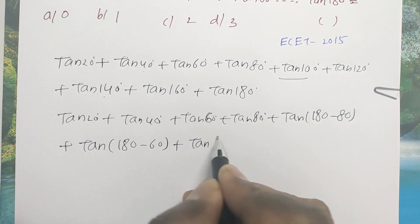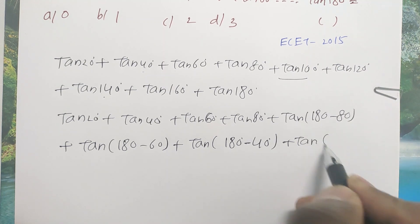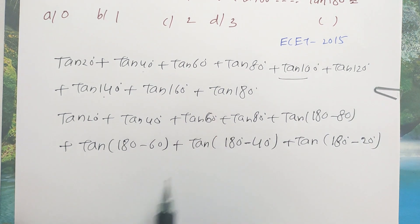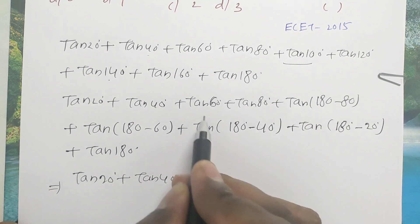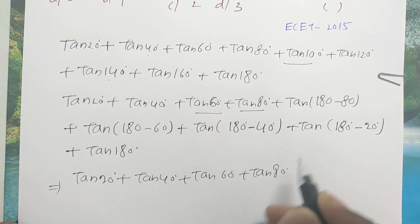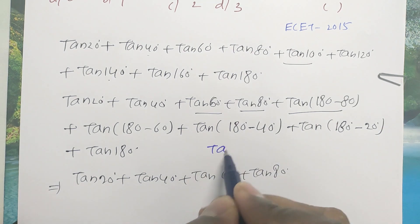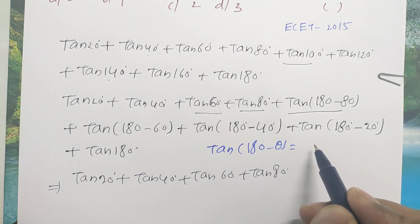Tan of 180 minus 40 degrees, tan of 160 degrees equals tan of 180 minus 20 degrees, plus tan of 180 degrees. That equals tan 20 plus tan 40 plus tan 60 plus tan 80. Now, tan of 180 minus theta: in the second quadrant, tan of 180 minus theta equals minus tan theta.